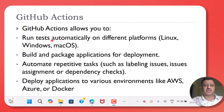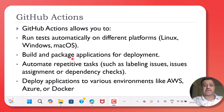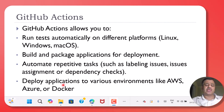GitHub Actions allow us to run tests automatically on different platforms, helps us to build and package the application for deployment, and can automate repeated tasks like labeling and issue assignment. It can also handle deployment of our application on various environments like AWS, Azure, or Docker.